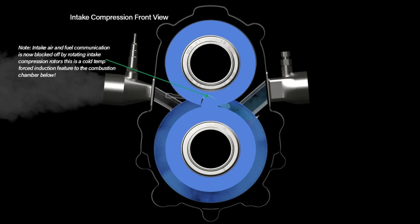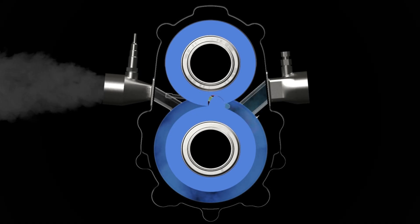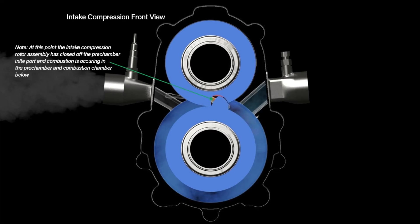The intake air and fuel communication is now blocked off by rotating intake compression rotors. This is a cold temp-forced induction feature to the combustion chamber below. At this point, the intake compression rotor assembly has closed off the pre-chamber inlet port, and combustion is occurring in the pre-chamber and combustion chamber below.